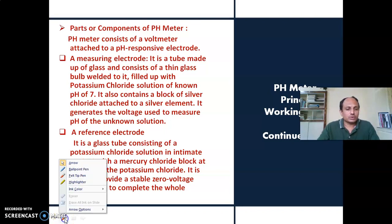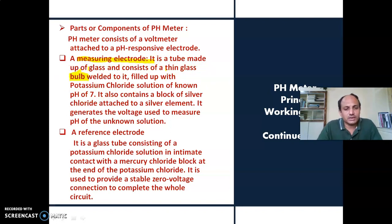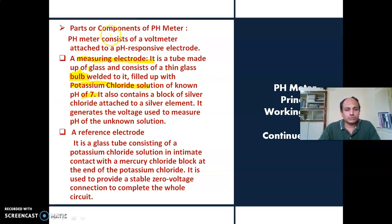One electrode is called the measuring electrode. That electrode is a tube made up of glass — it consists of a thin glass tube with a glass bulb, which is filled with potassium chloride having a pH of 7. It also consists of a silver block, that is a block of silver chloride, which is attached to a silver element and generates the voltage. It is used to measure the pH of the unknown solution.